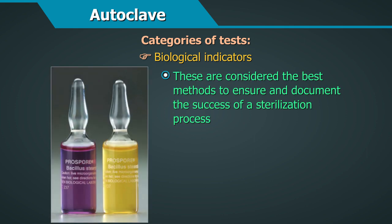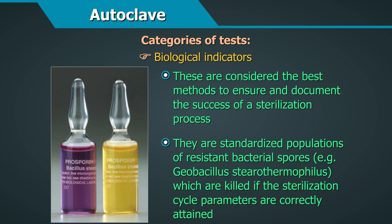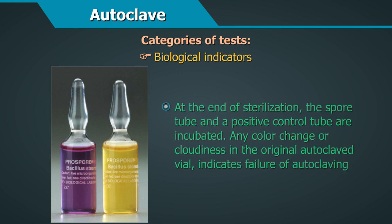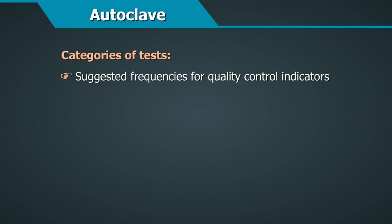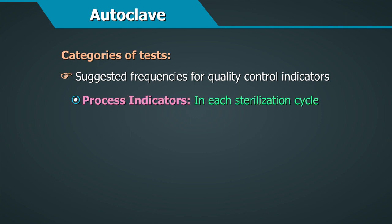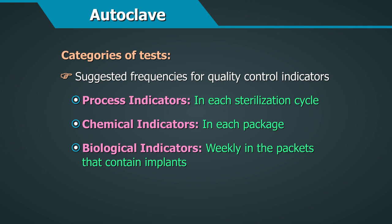Biological indicators are considered the best method to ensure and document the success of a sterilization process. They are standardised populations of resistant bacterial spores, such as Geobacillus stearothermophilus, which are killed if the sterilization cycle parameters are correctly attained. At the end of sterilization, the spore tube and a positive control tube are incubated — any colour change or cloudiness in the autoclaved vial indicates a failure. Suggested frequencies for quality control indicators are: process indicators in each sterilization cycle, chemical indicators in each package, and biological indicators weekly in all sterilization equipment and in packets containing implants.